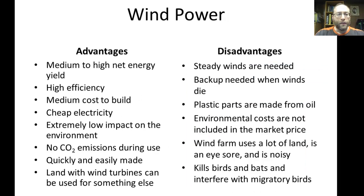Advantages of wind power: medium to high net energy yield, highly efficient, medium construction cost but very cheap electricity once built, and extremely low environmental impact with no CO2 emissions during use — though there are emissions during manufacturing. The land where turbines are situated can still be used for other purposes — crops, grazing cattle. You can also have a wind turbine in your backyard, hooked up similarly to rooftop solar panels. There are incentives for building these, and any excess electricity is sold back to the power company — so your power meter runs backwards.